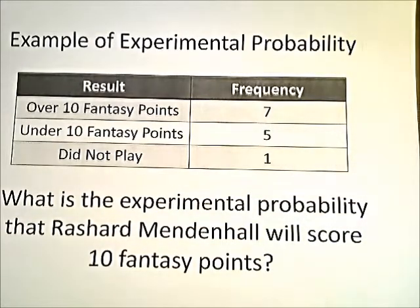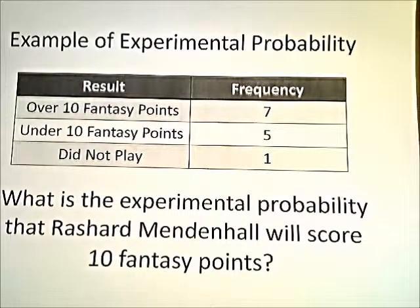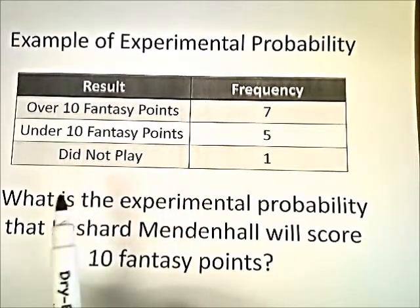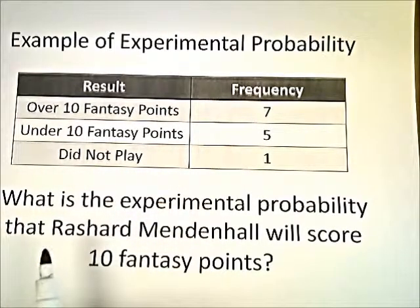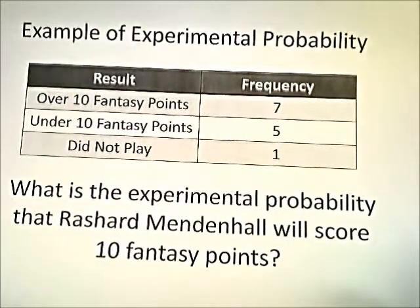In order to make a prediction about these weeks, we need to first determine the experimental probability of Mendenhall scoring over 10 fantasy points in the games he has already played. The table lists his fantasy results in the 13 games already played this season. Rashard has scored over 10 points in 7 out of 13 games, under 10 points in 5 out of 13, and he didn't play in 1.